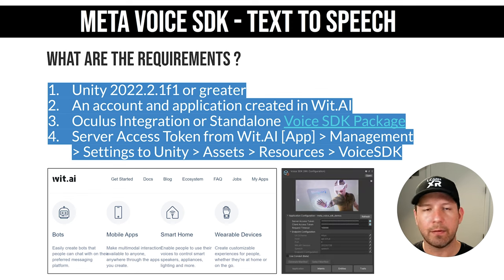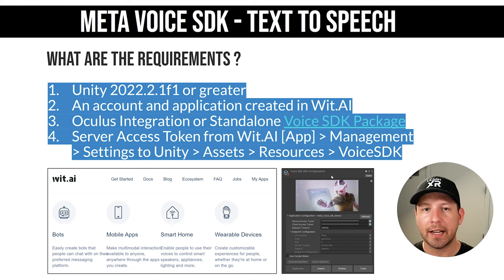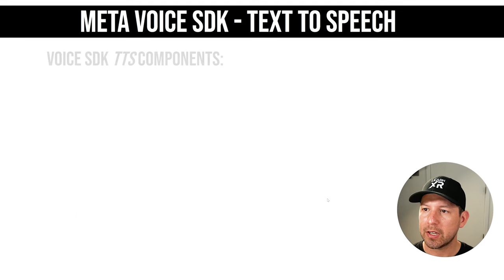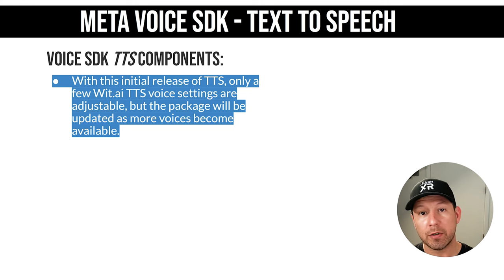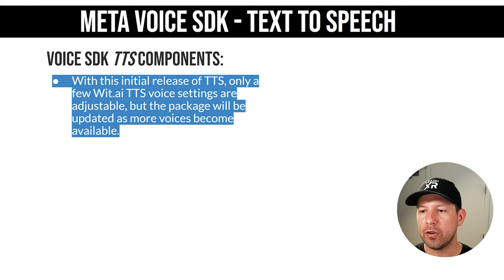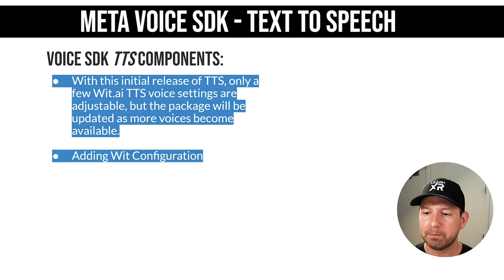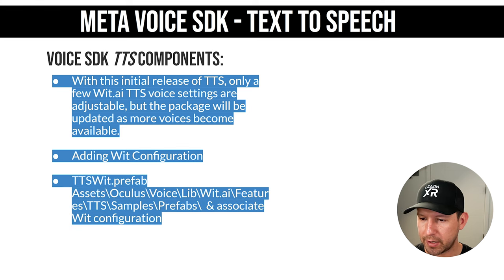You can get individual pieces by using these standalone downloadable packages. You'll need a server access token from the Wit portal, and you'll need to create a Wit configuration, which I also show in that video. Once you bring in the voices you get a prompt where you add the server access token and client access token, along with other settings for intents, entities, and trace.